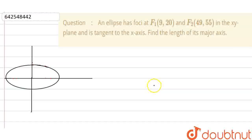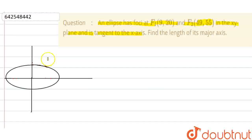Hello everyone. Our question is: an ellipse has foci F1(9, 20) and F2(49, 55) in the xy-plane and is tangent to the x-axis. Given that the ellipse is tangent to the x-axis, find the length of its major axis.